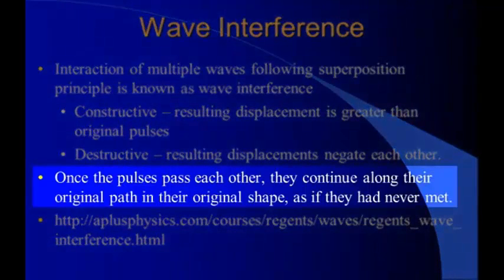Destructive interference is when the resulting displacements negate each other. The resulting displacement, the magnitude of the resulting displacement is less than the individual displacements. Again, once the pulses pass each other, they continue along their original path, their original amplitudes, as if they had never met.